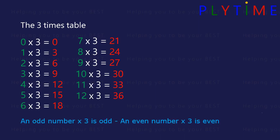An odd number times three is odd, and an even number times three is even.